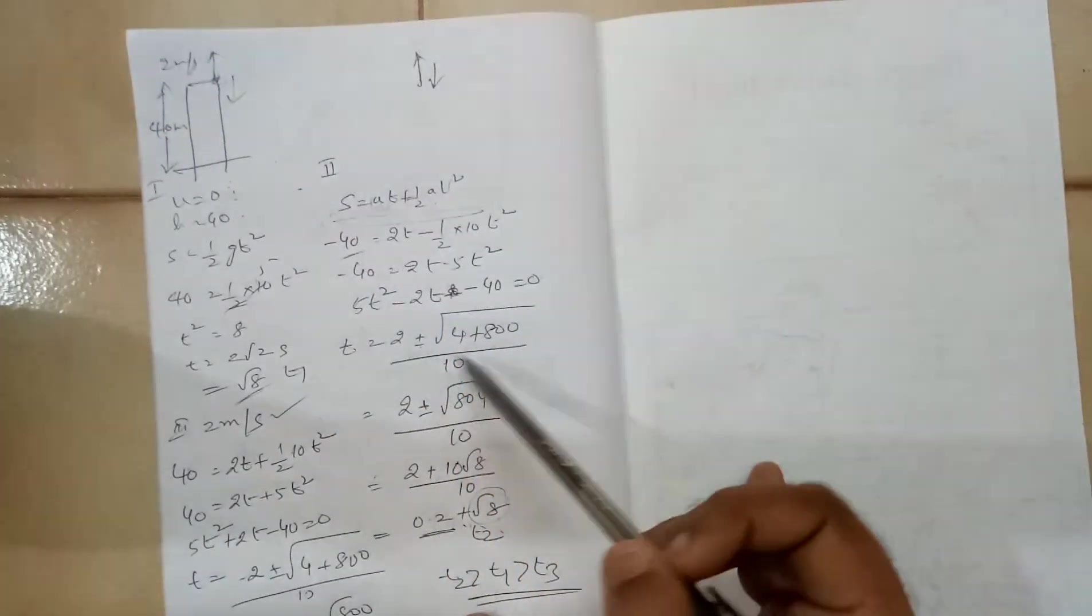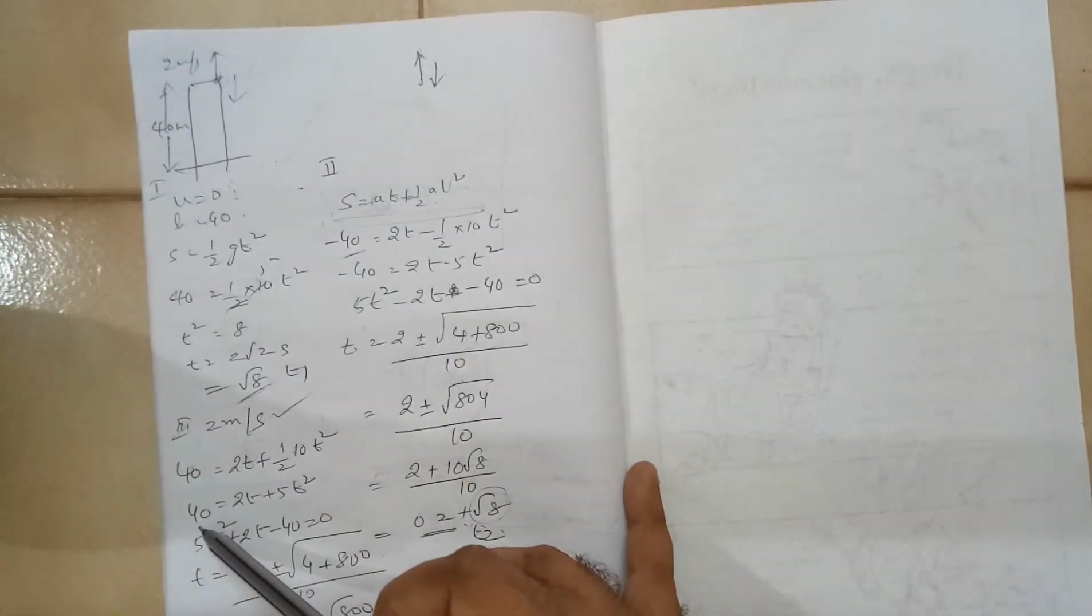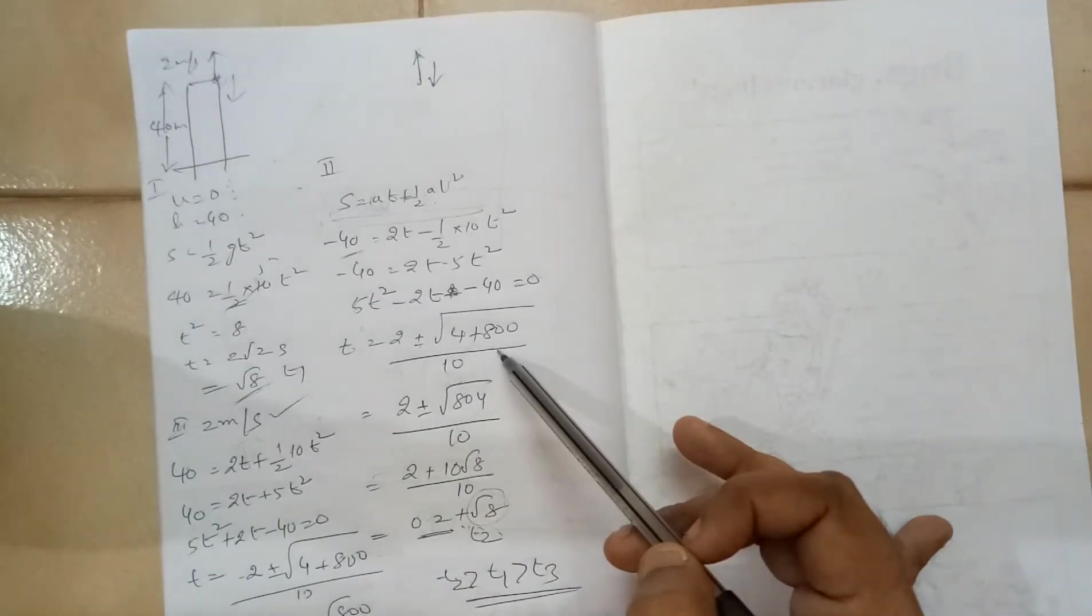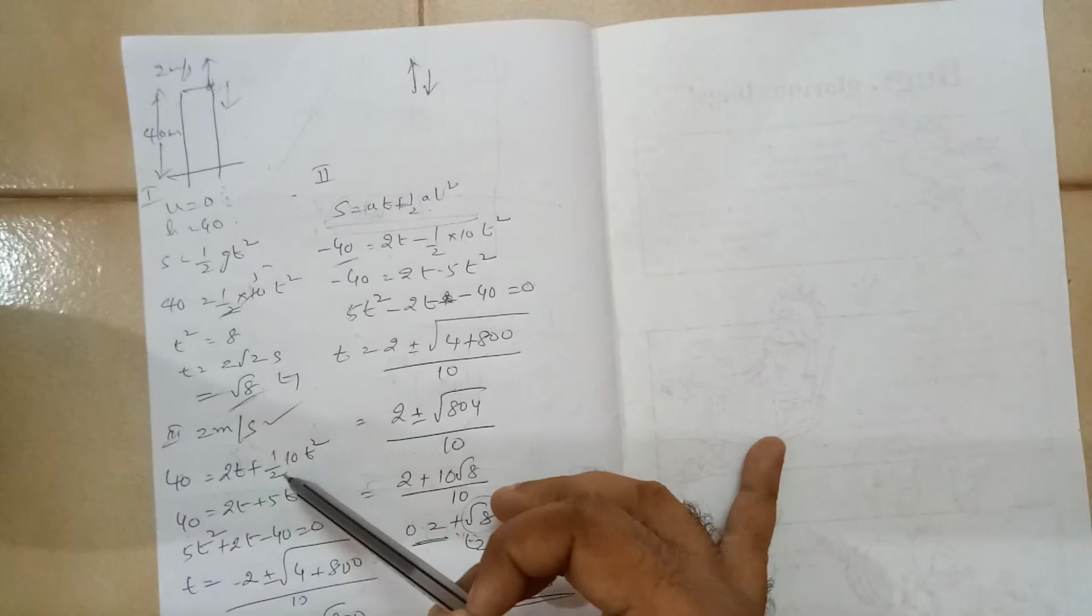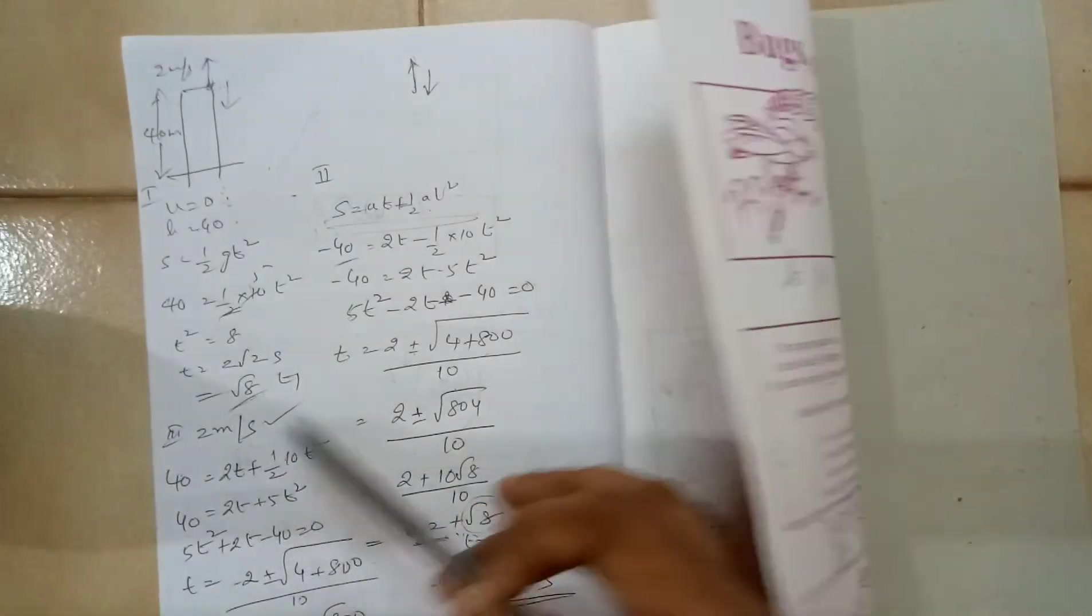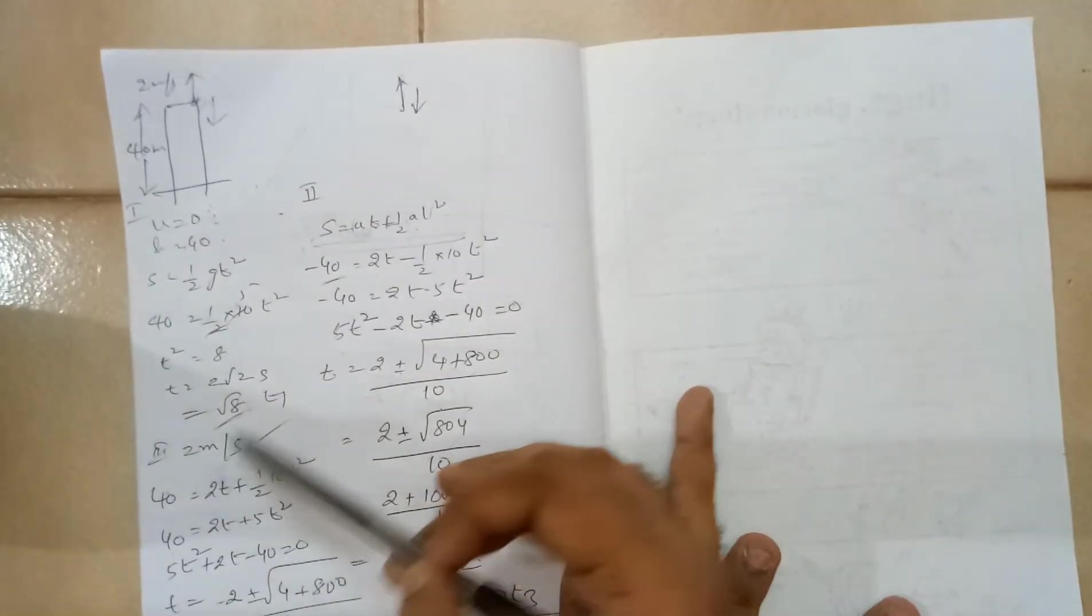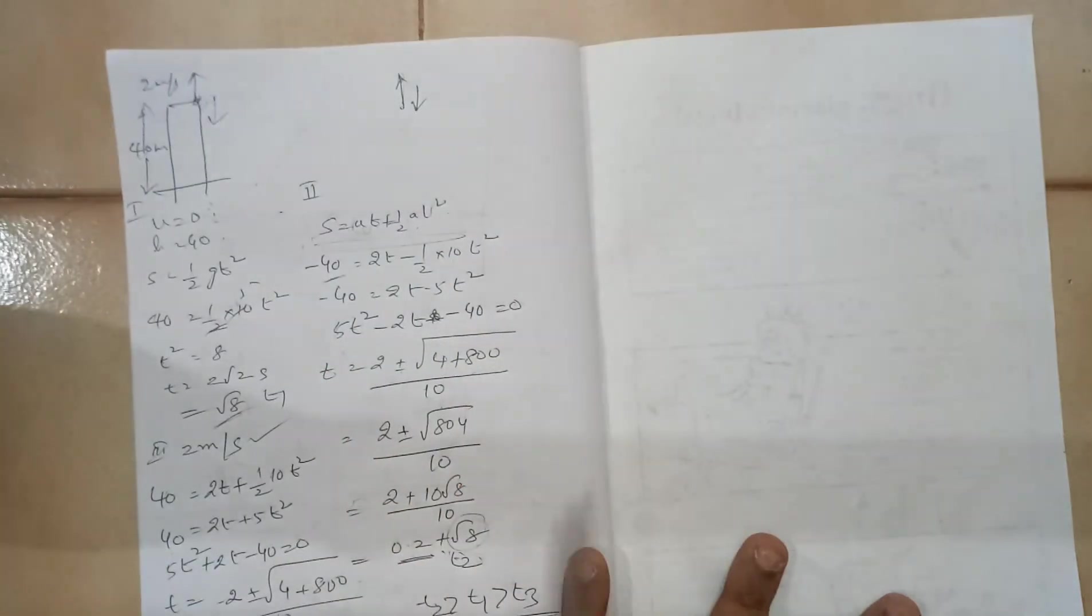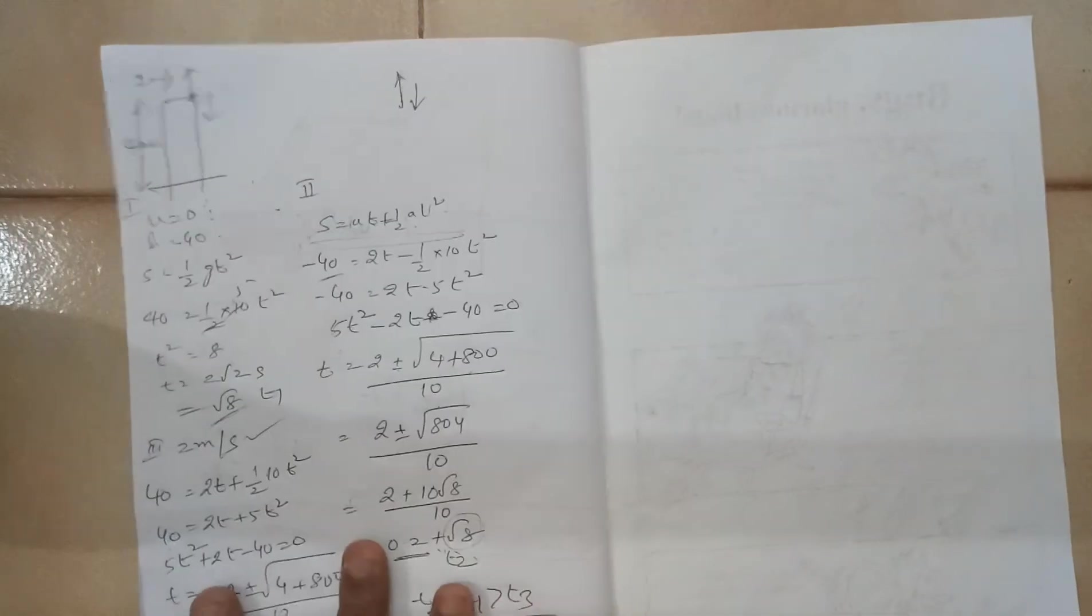The gap between them is the displacement. Because here we are assuming downward direction is positive, I have put plus 40 equals 2t plus half 10t squared. Even u also I am considering positive because in this case, I have assumed all 3 are in the downward direction. So we have taken positive 2.